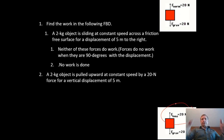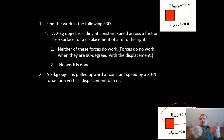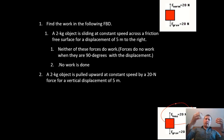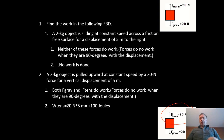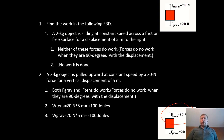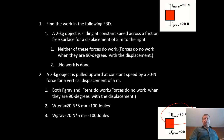Example five: a 2-kilogram object is pulled upward at constant speed by a tension of 20 newtons, with a vertical displacement of 5 meters. Both gravity and tension do work here. Tension: 20 N × 5 m = 100 joules. Gravity: 20 N × 5 m = negative 100 joules. Remember, energy is never a vector — it has no direction.